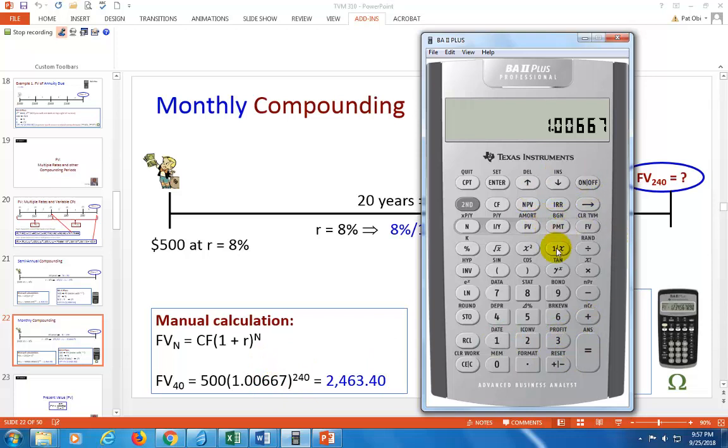Then I go ahead and find the complete future value interest factor for 240 periods. So hit Y to the X where X is 240 equal. This is our future value interest factor for this 20 year investment or 240 month period investment. And then you can multiply by 500. And that's your future value right here, which is shown right here.